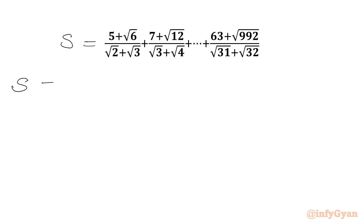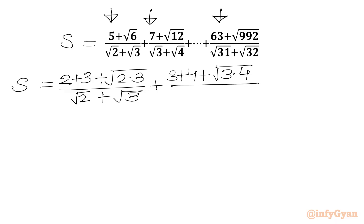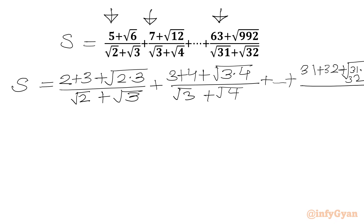We can write S by splitting the terms: 5 can be written as 2 plus 3, and we have square root of 6, which can be factored as 2 times 3. In the denominator we write root 2 plus root 3. Then 7 is 3 plus 4, and 12 can be factorized as 3 times 4, giving root 3 plus root 4. The last term: 63 is 31 plus 32, and square root of 992 is square root of 31 times 32, over square root 31 plus square root 32.